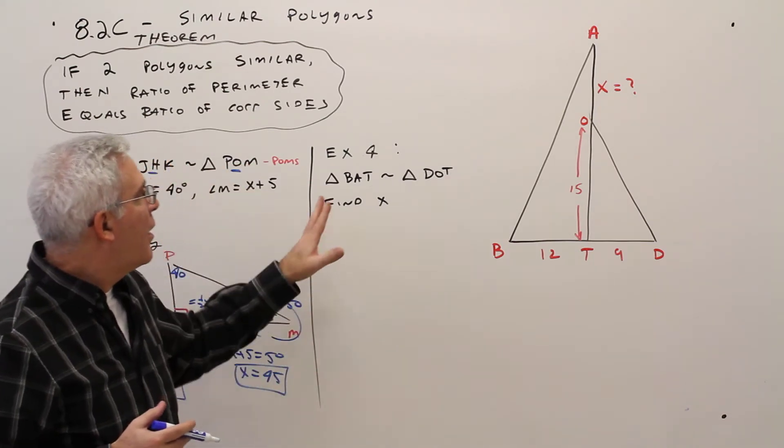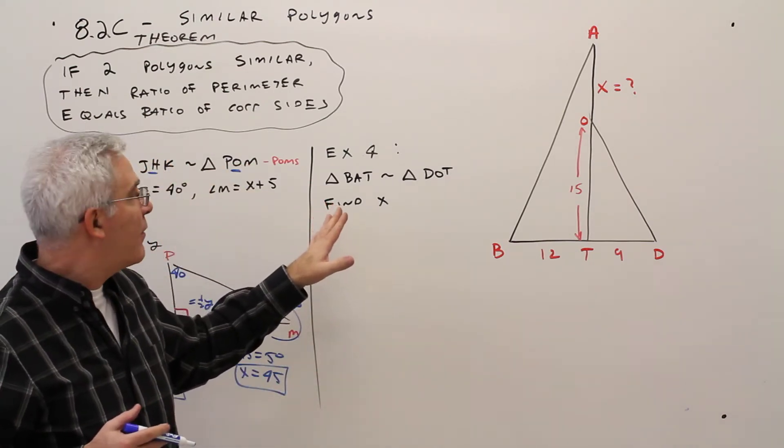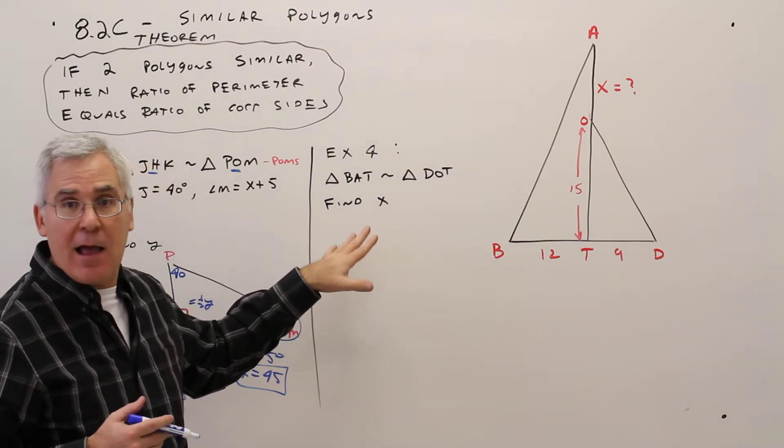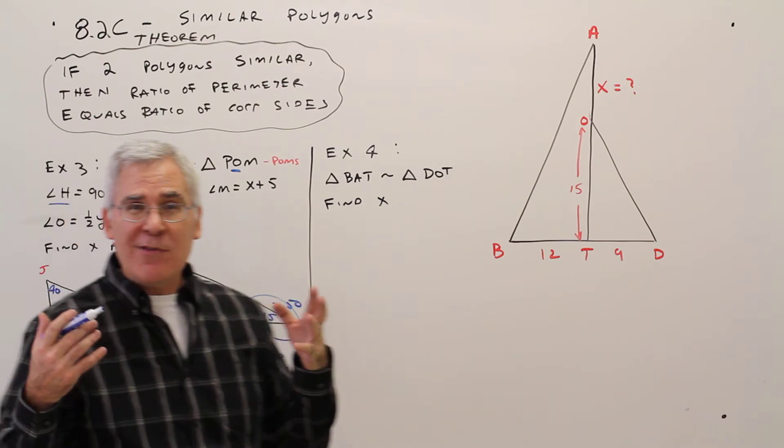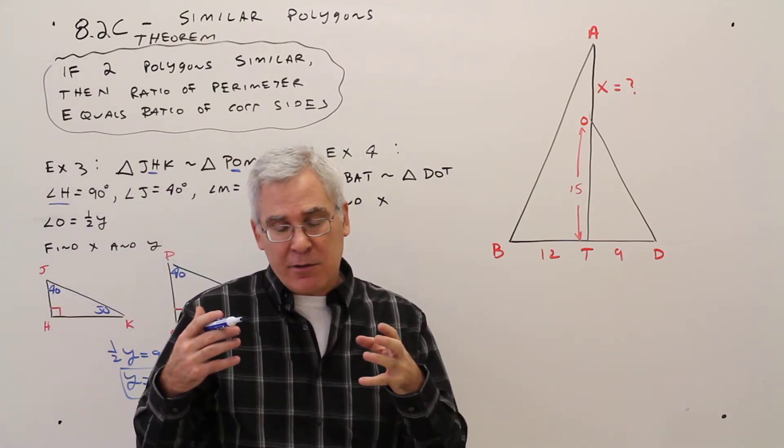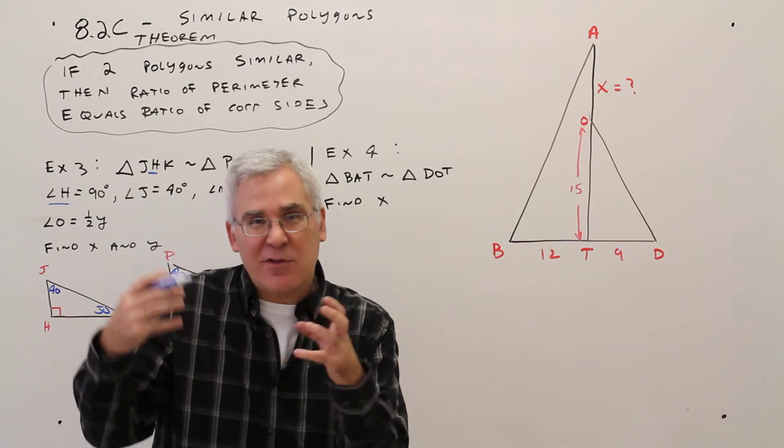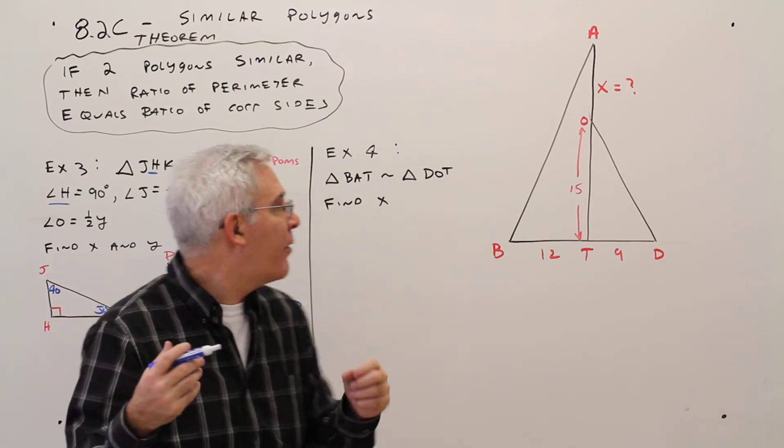Alright, example 4. We've got triangle BAT is similar to triangle DOT. Find X. Okay, so what I'm always looking for when I've got similar triangles or polygons is, do I have a certain scale factor or ratio that I know?